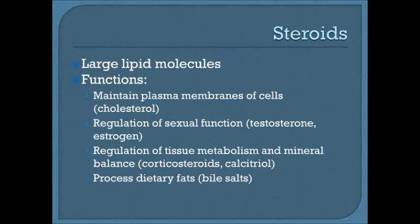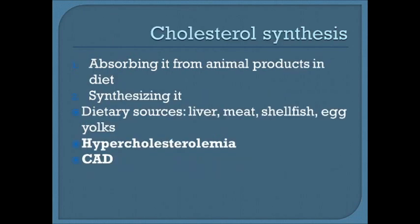Steroids are larger lipid molecules. They function to maintain the plasma membranes of cells as cholesterol — making membranes rigid but also flexible. They regulate sexual function via steroid hormones like testosterone and estrogen. They regulate tissue metabolism and mineral balance via corticosteroids and calcitriol. They also help process dietary fats as bile salts, which are produced by the liver, stored in the gallbladder, and help break down dietary fats.